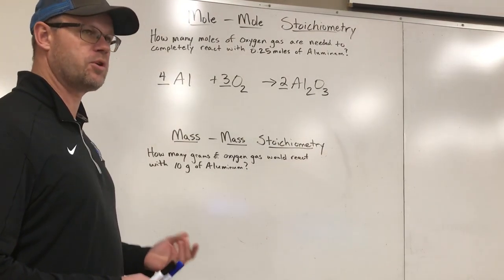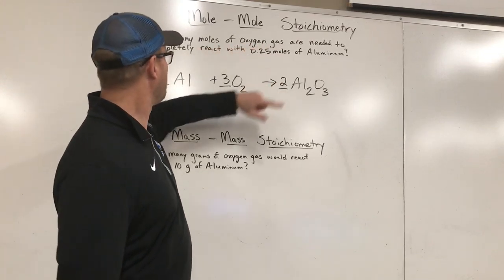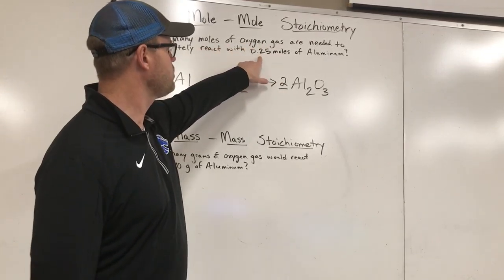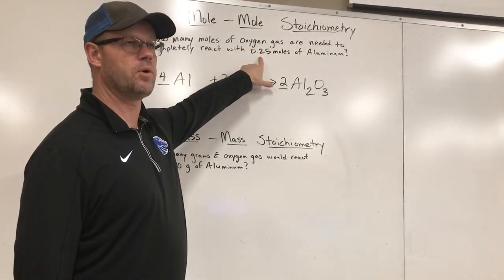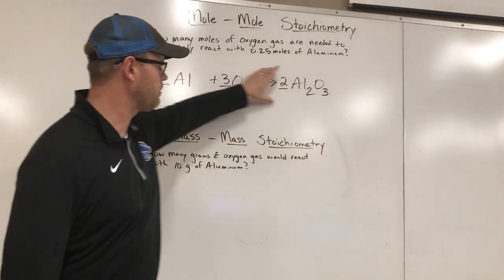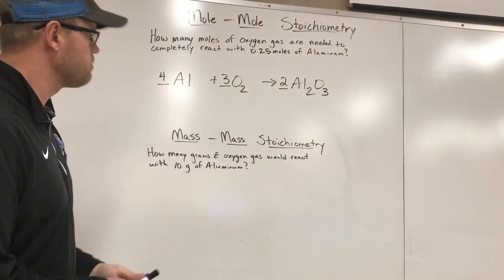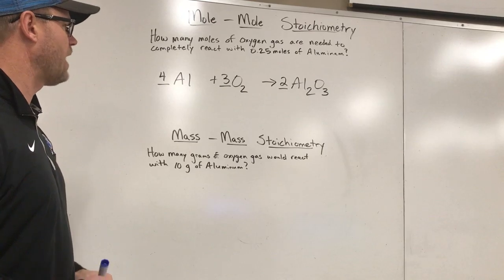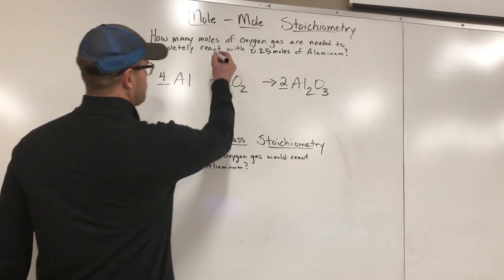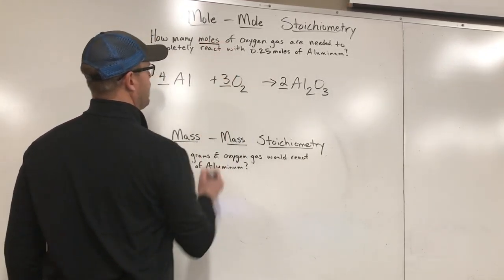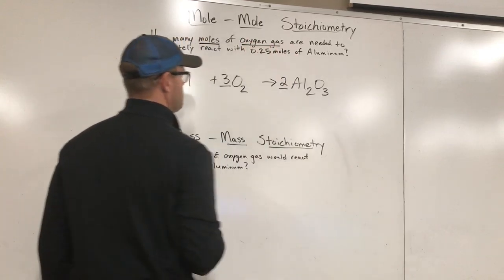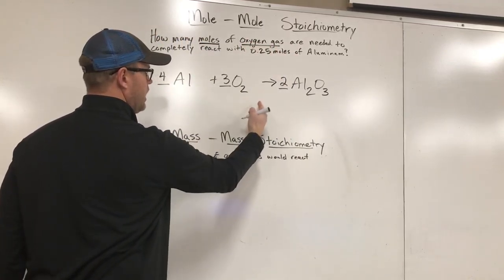So let's take a look at this first one. It says, how many moles of oxygen gas are needed to completely react with 0.25 moles of aluminum? Now here we have a balanced equation for that reaction. So the first thing we're going to do is make sure we recognize what things we're actually dealing with. So as I read this, I'm looking for how many moles of oxygen gas. Which one of these three things is oxygen gas? That's this one right here.